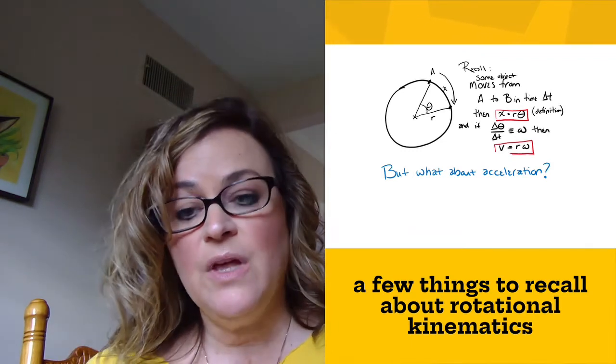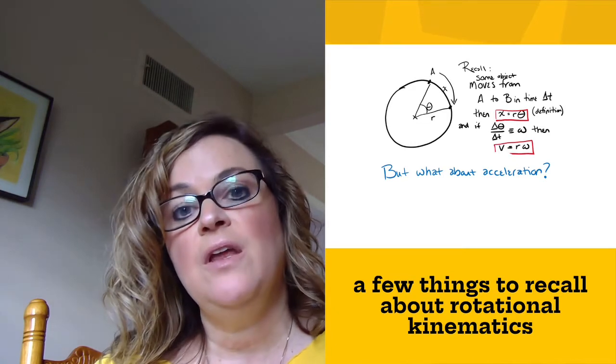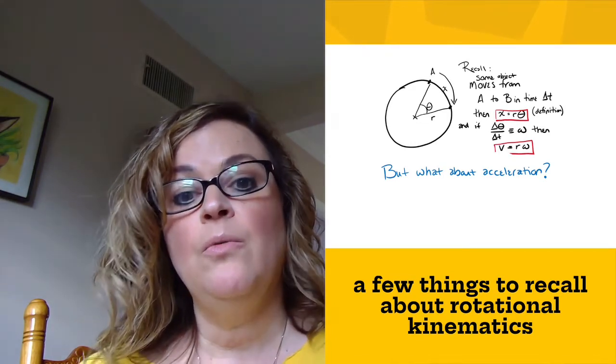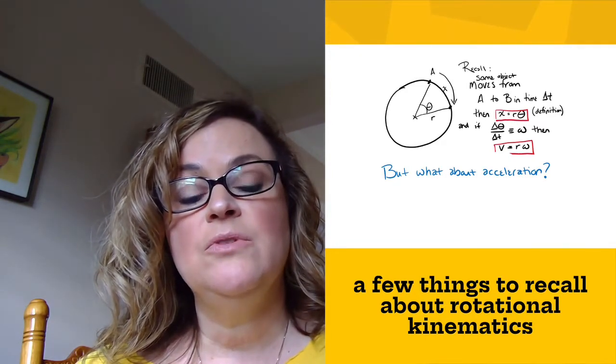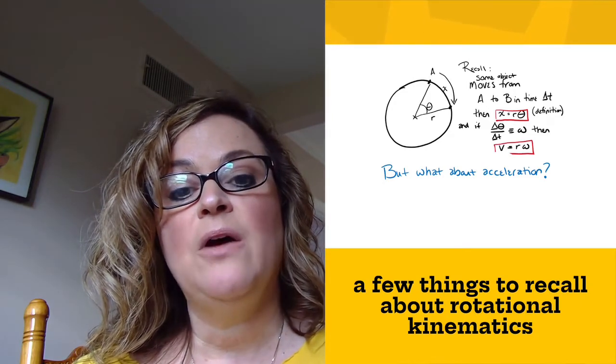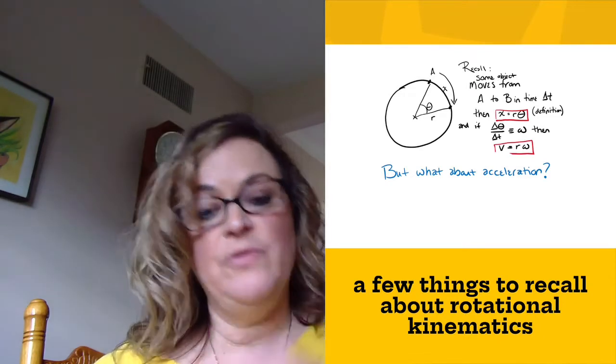And we can talk about its angular velocity now instead of its linear velocity, angular velocity being the change in theta as time goes by, and that is the variable omega. If we want to connect the linear space to the rotational space, we say that v equals r times omega, and that gives us back our velocity in meters per second. So this is all kind of review from last time.